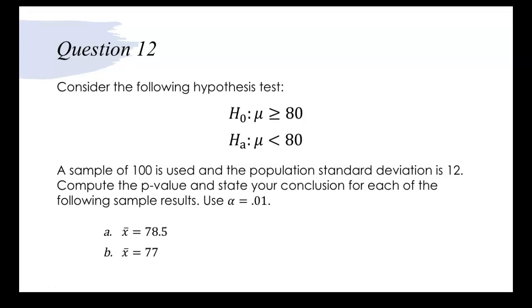Let's go through question number 12 from chapter 9. The question says consider the following hypothesis test. Our null hypothesis is that mu is greater than or equal to 80 and our alternative hypothesis is that mu is less than 80.